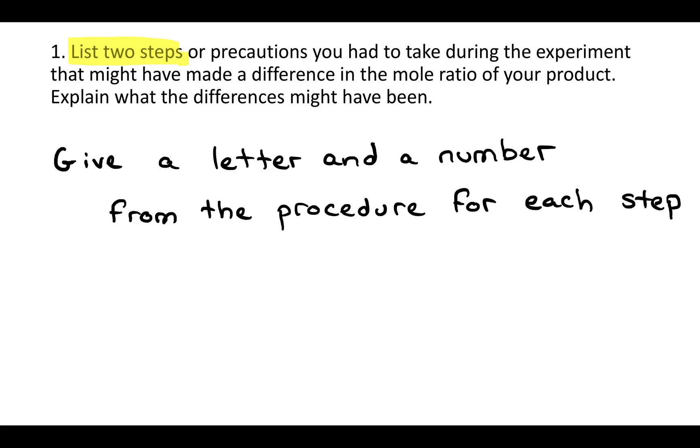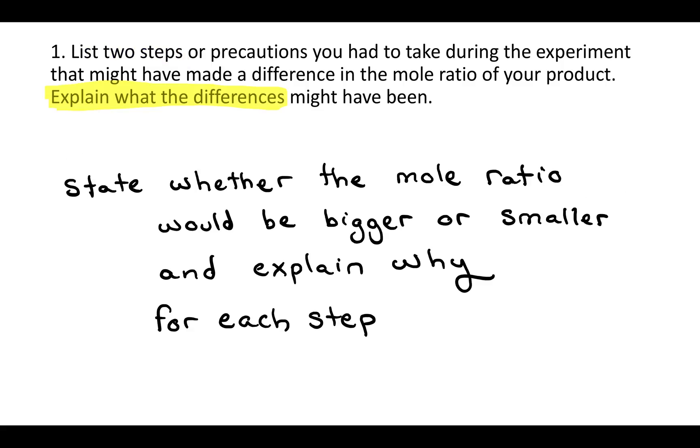First, to list the two steps, you want to give a letter and a number from the procedure to clearly identify which steps you're talking about. And for each step, you want to state whether the mole ratio would be bigger or smaller and explain why. Here we're talking about the ratio between magnesium and oxygen. Question three might give you some helpful ideas on where to look in the procedure to find those steps that would affect the mole ratio, and how.